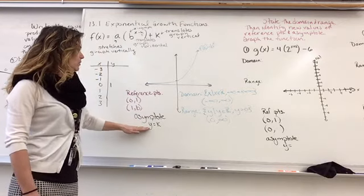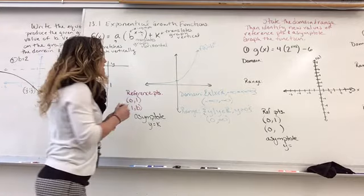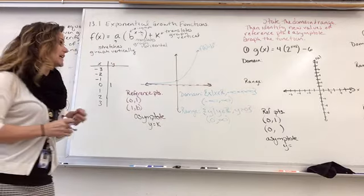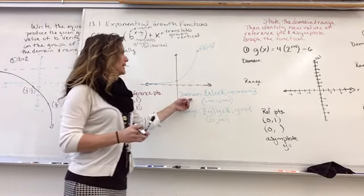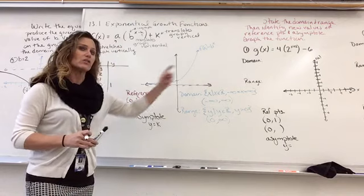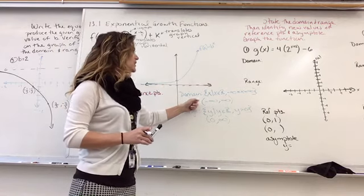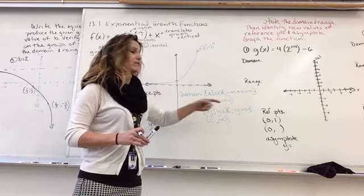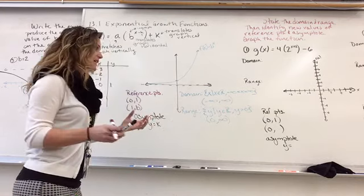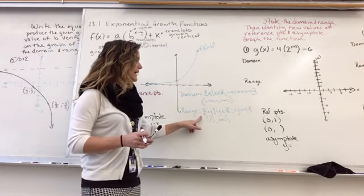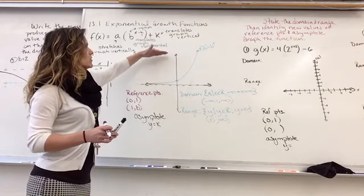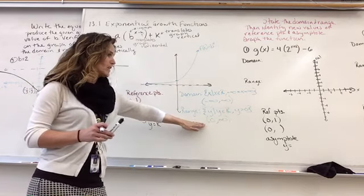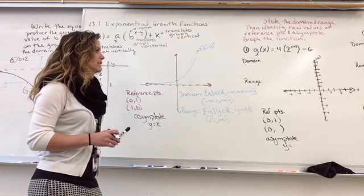Our asymptote will always be at Y equals K. Since we have no K here, that means our asymptote — the line the graph can't cross — is the X-axis. Domain: the X values go left and right and continue forever, so it goes from negative infinity to positive infinity. In interval notation: (negative infinity, positive infinity). Our range: Y values are only above the X-axis, so Y has to be greater than 0. In interval notation, that is (0, positive infinity).